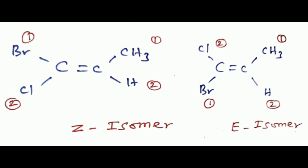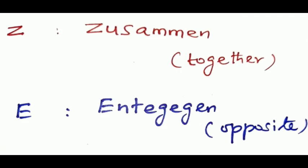If the two groups of higher priority are located on the same side of the double bond, the alkene is designated as the Z isomer, from the German word zusammen meaning together. If they are on opposite sides, it is the E isomer, from the German word entgegen meaning opposite.